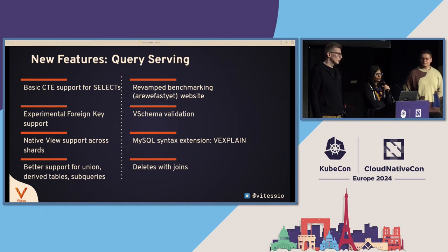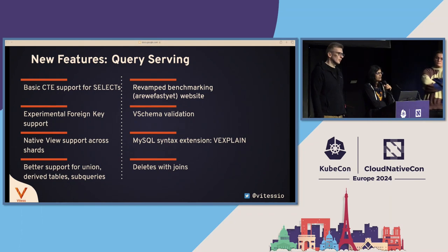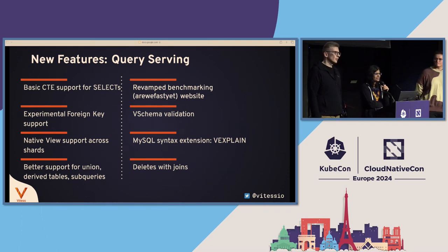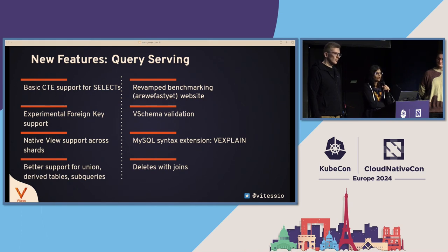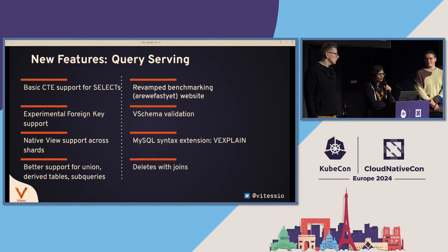We added support for views across shards. This is something you just can't do in MySQL — views are local to a given MySQL server. But with VITES, you can create views that are cross-shard, managed by VITES, and queries against those views work even when the underlying data has to go across shards. We've also added better support for unions, derived tables, and sub-queries. And we revamped our benchmarking website — the VITES sub-project we call 'Are We Fast Yet?' at benchmark.vitess.io. We run a certain number of benchmarks every day and measure every new release against the previous release to ensure no regressions in query performance. These include OLTP, OLAP which are Sysbench, and also TPC-C workloads. We have a new UI for the website that is much more usable than the previous version.